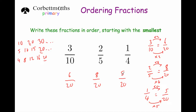Putting those in order, 5 twentieths is the smallest — that's 1 quarter. The next smallest is 6 twentieths, which is 3 tenths. And the largest is 8 twentieths, which is 2 fifths. So to put fractions in order, just find the equivalent fractions which have the same denominator for each of the numbers, and then put them in order from smallest to largest.